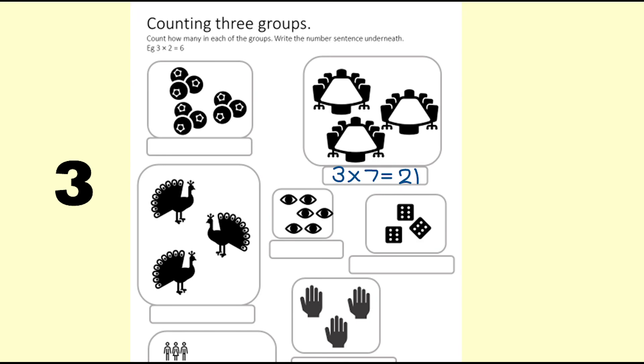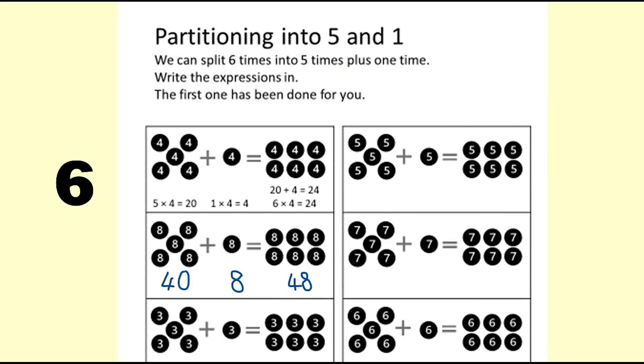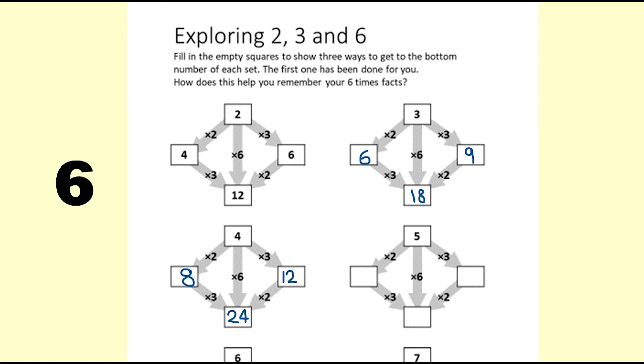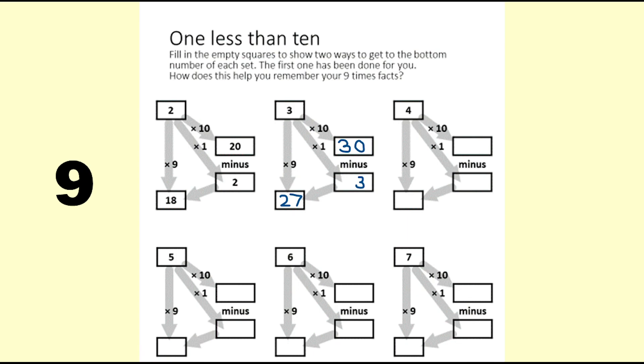3 times is double plus another. 6 times is 5 times plus another, or 6 times can be thought of as double 3 times. 9 times is 10 times minus 1 group.